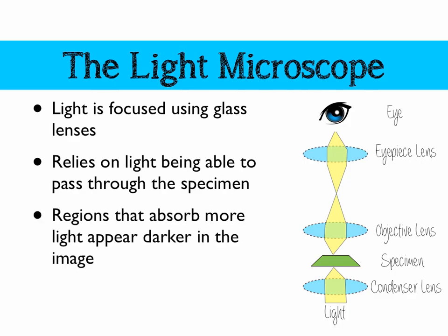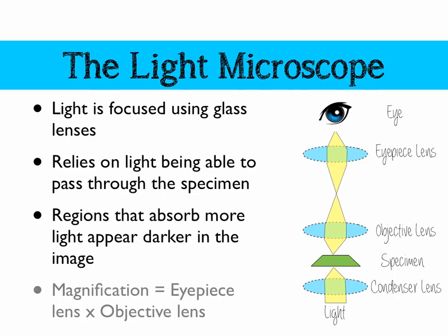The regions that absorb more light appear darker in the image. To calculate the magnification of a light microscope, we look at the number on the eyepiece lens — which most of the time is 10 times — and multiply that by the objective lens magnification. Most light microscopes have a swivel arrangement of three objective lenses, to allow you to get progressively closer to your sample.